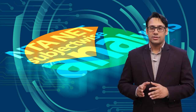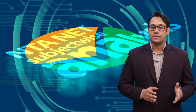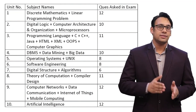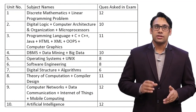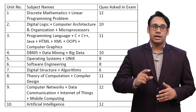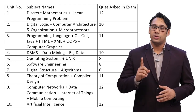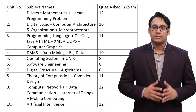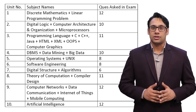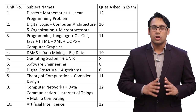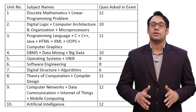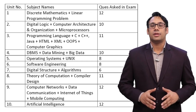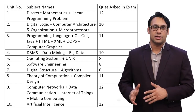Now let me go unit-wise. Unit 1 includes discrete mathematics and linear programming — they asked a total of 12 questions, but from linear programming itself only 1 question. That means discrete mathematics becomes very, very important, as they are asking 11 questions from it. There is no way you can leave this subject, because it is one of the most important subjects in your entire preparation.